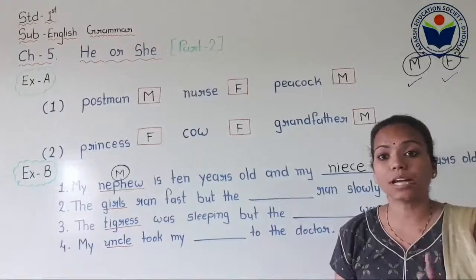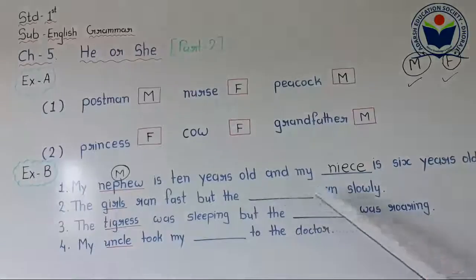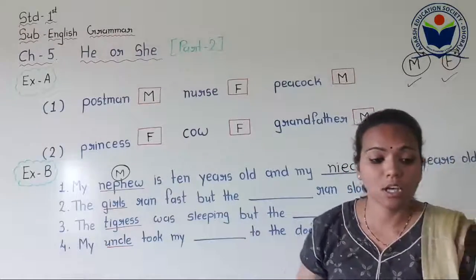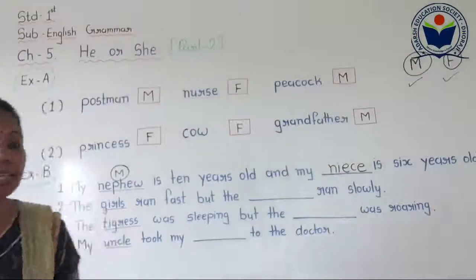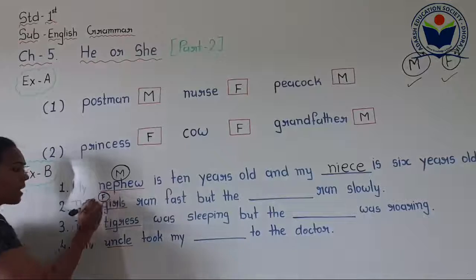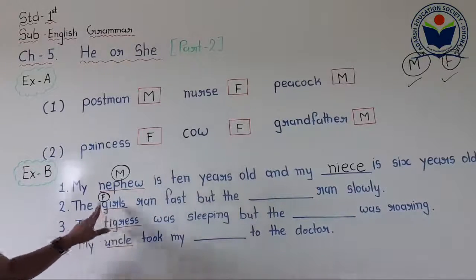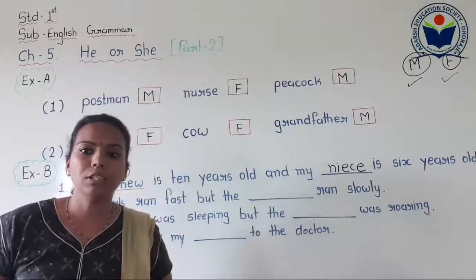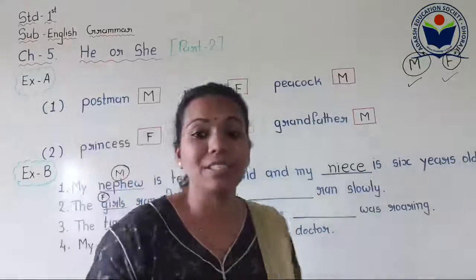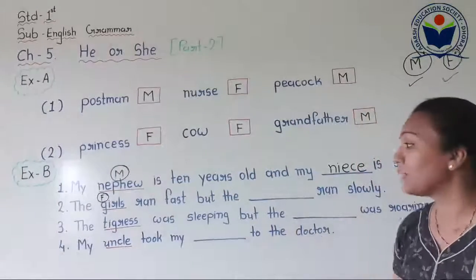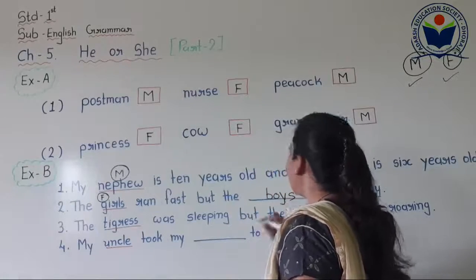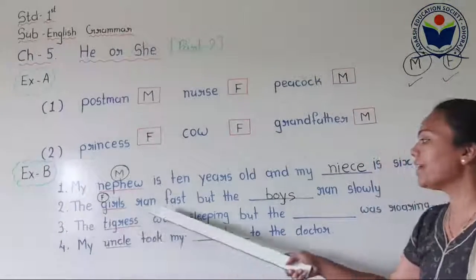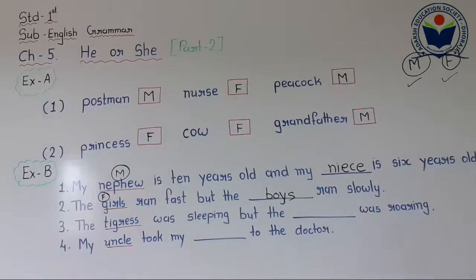Number two: 'The girls ran fast, but the blank ran slowly.' Girls — G-I-R-L-S — is a female naming word. So we have to write the opposite, which is boys — B-O-Y-S. The complete sentence reads: 'The girls ran fast, but the boys ran slowly.' Very good, children — keep it up. Because you read the male and female table, it helps you a lot when doing exercises.